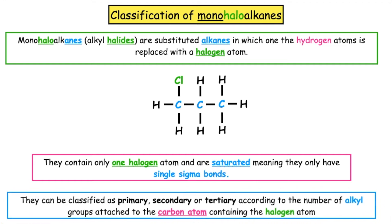They can be classified as primary, secondary, or tertiary according to the number of alkyl groups attached to the carbon atom containing the halogen atom.